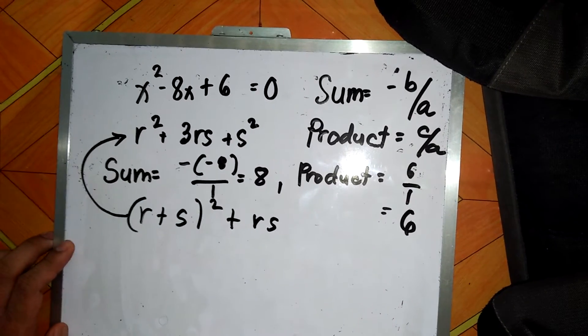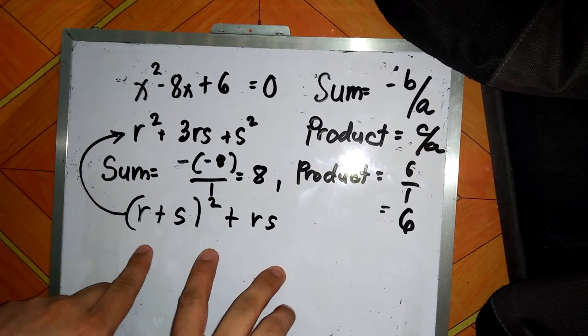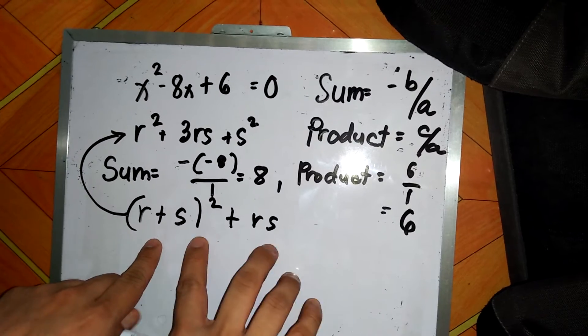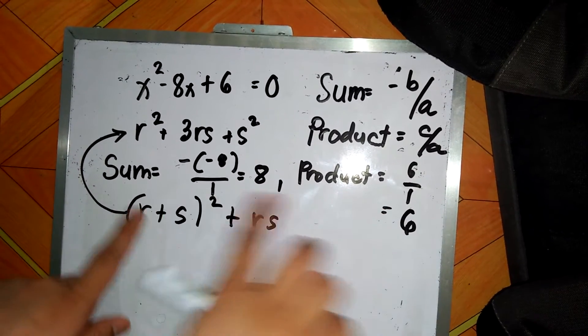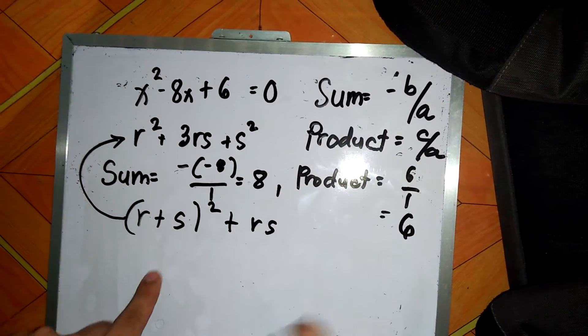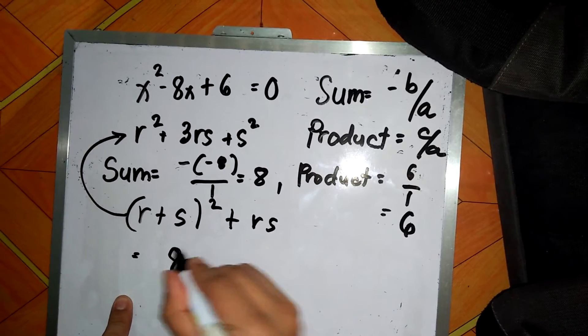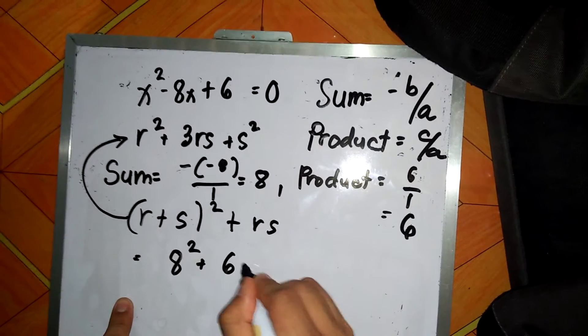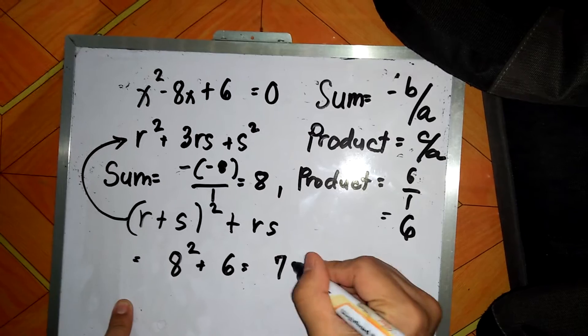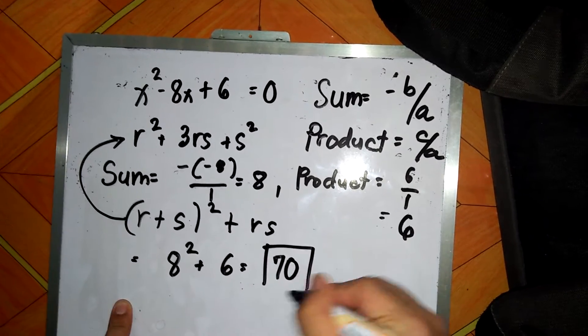Once you establish the equation, you can just substitute the values we have obtained earlier. So this will become 8 squared plus 6, so that is equal to 64 plus 6 or positive 70.